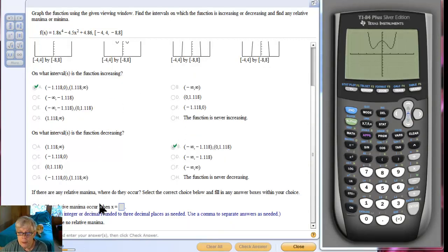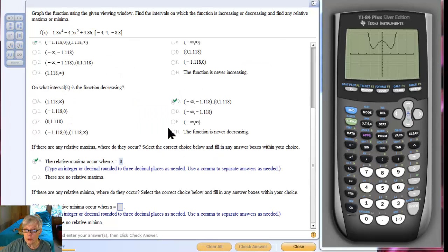Now, if there are any relative maxima, where do they occur? Well, there is one relative max right here. In its little neighborhood, it's the tallest point. You can't say it's the absolute maximum because the graph goes up forever and ever. There will always be points higher than this point. However, this occurs at x equals 0. So, let us say x equals 0. And we're going to check our answer. Yes, we're correct.